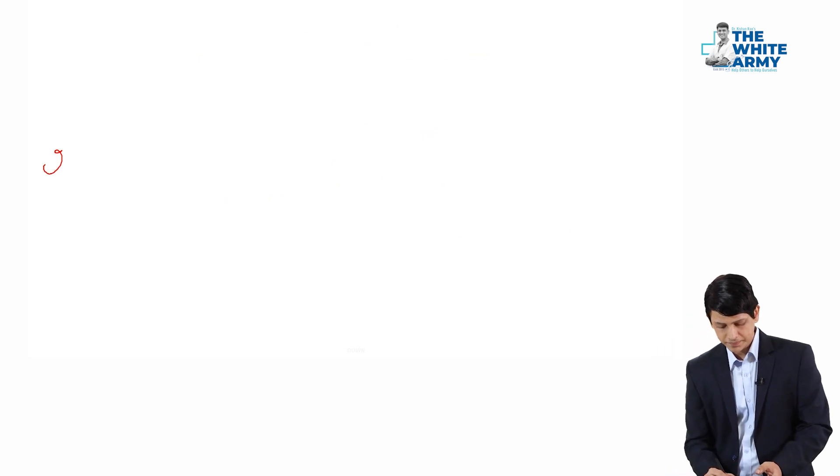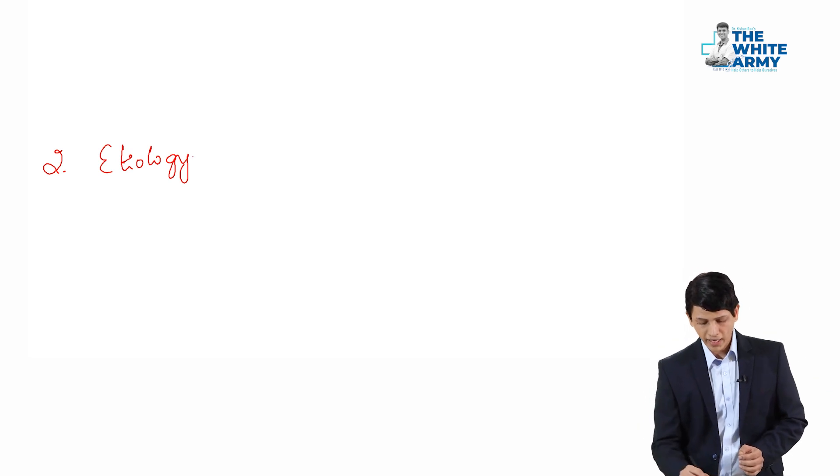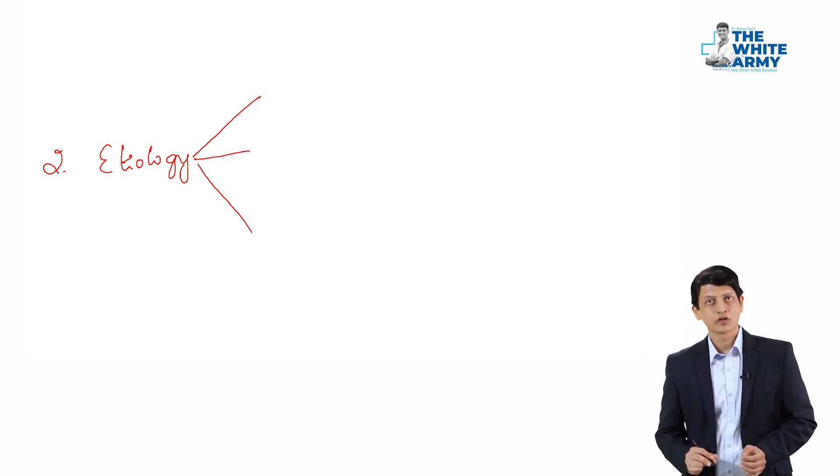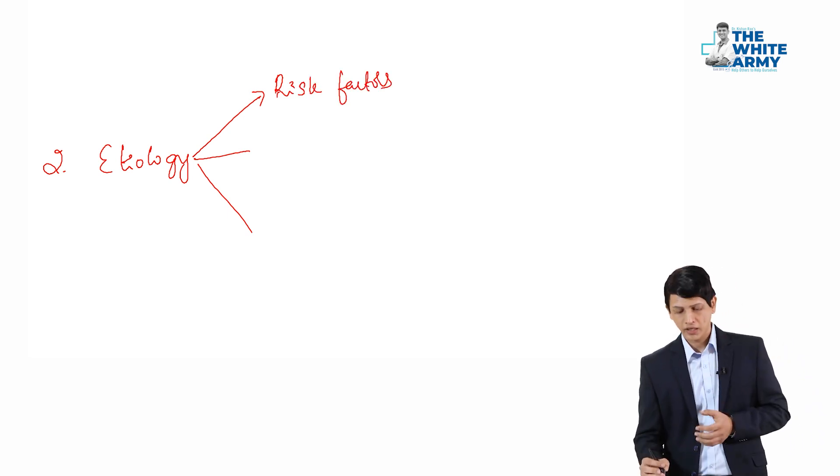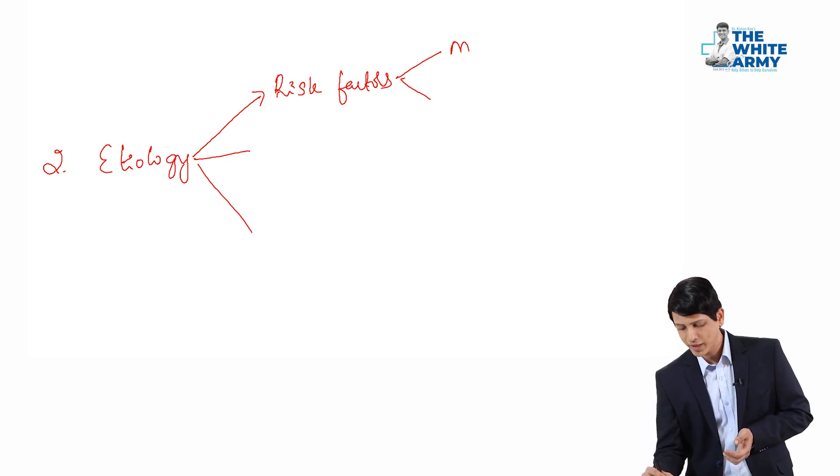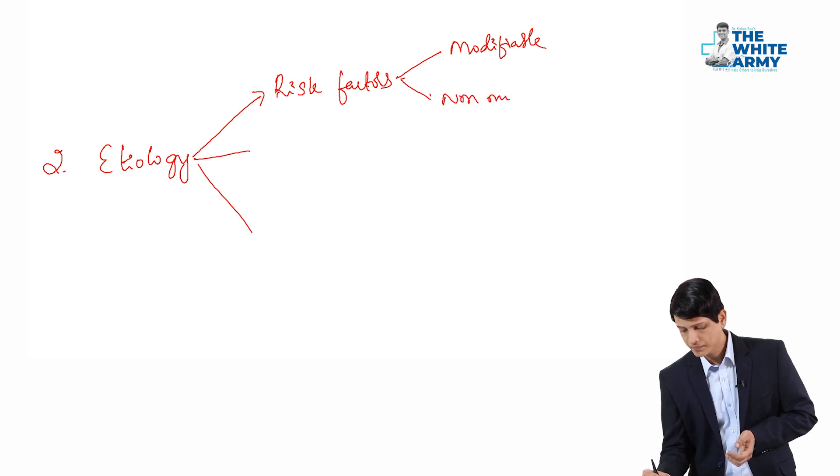Second one is etiology. Under this heading, you again have three subheadings. First is risk factors. Risk factors for the particular condition. Again, you can classify them into modifiable and non-modifiable.